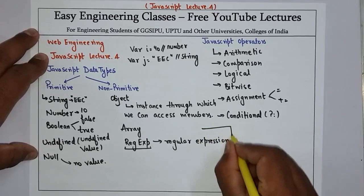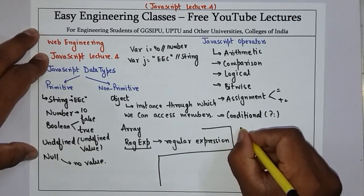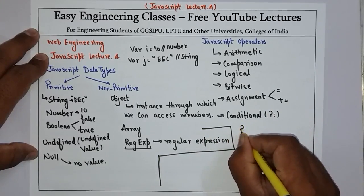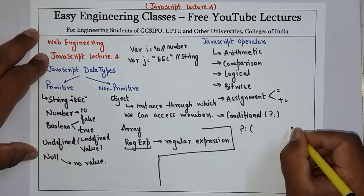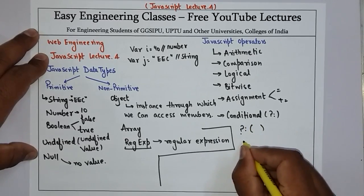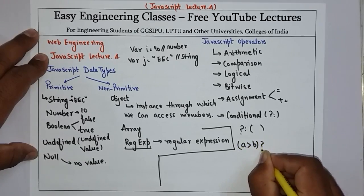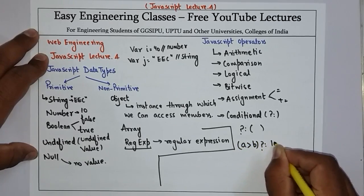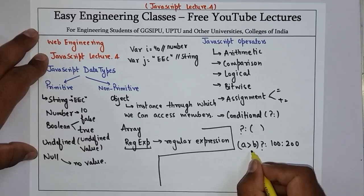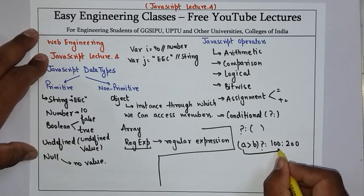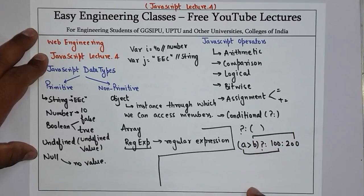If you have ever studied Java, you'll know we use the conditional operator there as well. The conditional operator uses a question mark and colon. For example: var result = a > b ? 100 : 200. If a is found to be greater than b, then 100 will be printed, else 200 will be printed. That is the conditional operator.